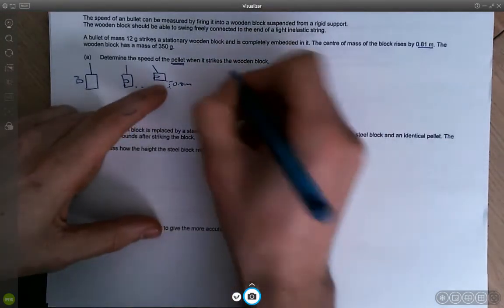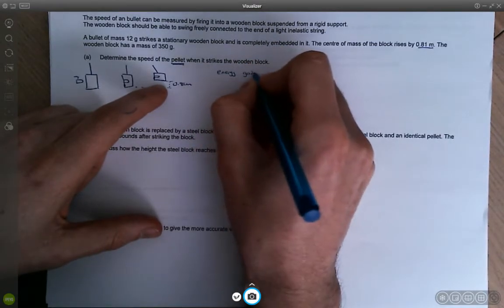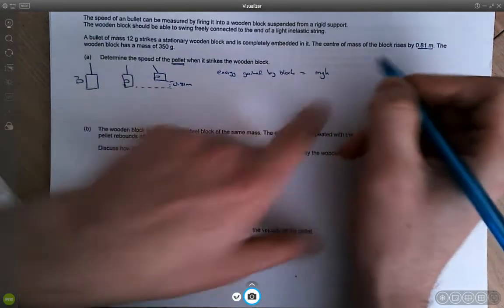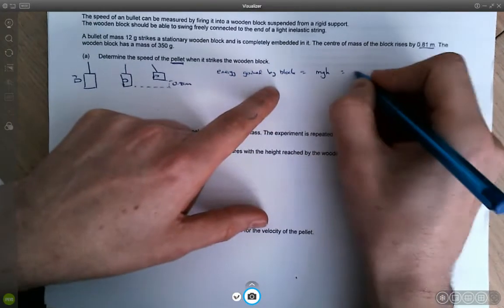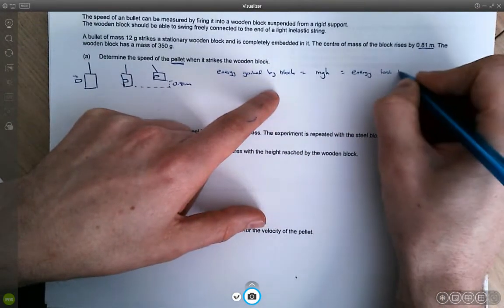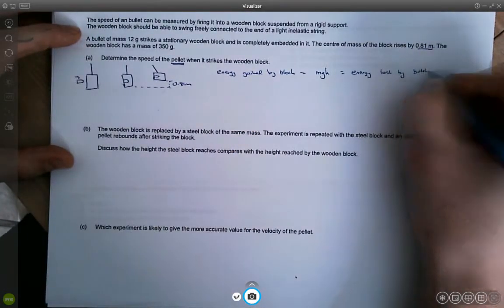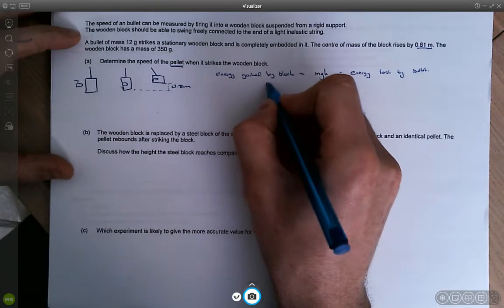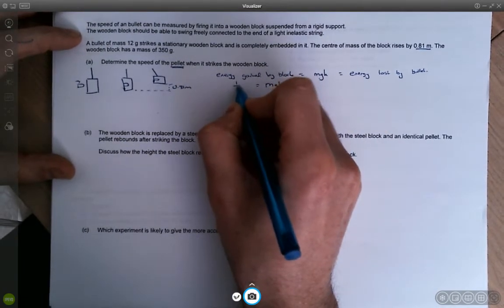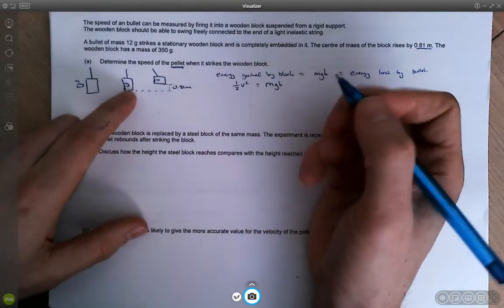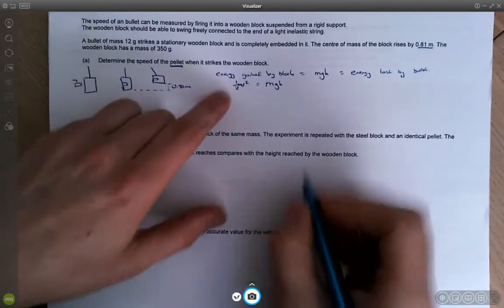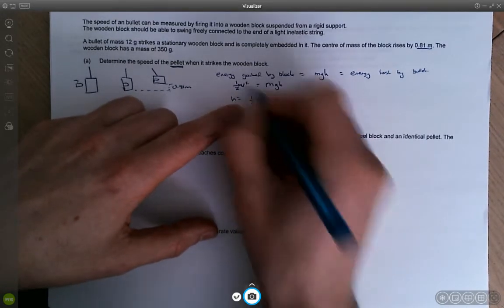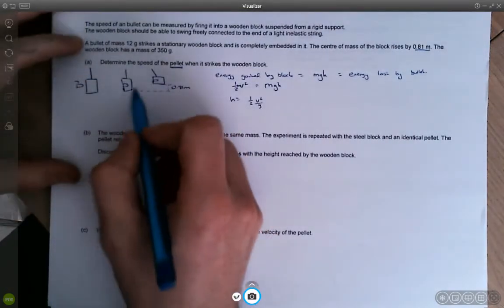So the first thing that probably comes to mind is that the energy gained by the block equals the gravitational potential energy of the block. And where has that come from? That equals the energy lost by the bullet. So let's calculate this. So mgh is the energy gained and that's going to be equal to the block's initial kinetic energy, which is half mv squared. So the height of the block is going to be half v squared divided by g, because obviously the m's cancel and we're looking at the block at this point.